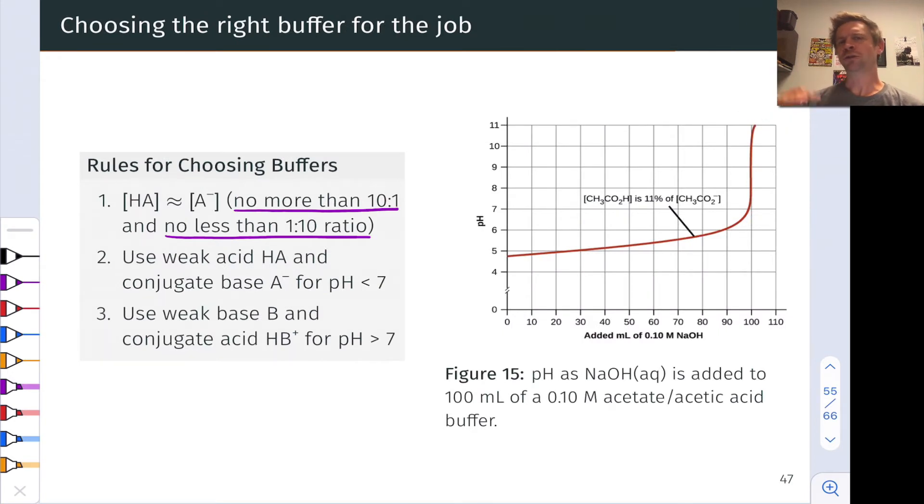Let's say we had a target pH in mind for a buffer system. How do we decide what acid and conjugate base to use to achieve that target pH? The first principle relies on this idea that to really be a buffer, the solution needs to contain a 1 to 10 or 10 to 1 or somewhere in between ratio of the weak acid and conjugate base. They've got to be approximately equal within one order of magnitude, no more than 10 to 1 and no less than 1 to 10.